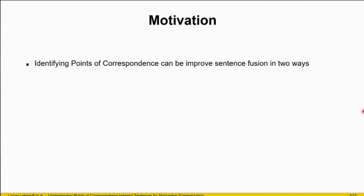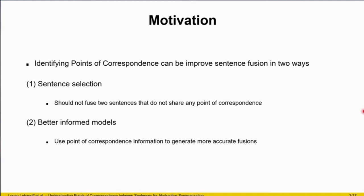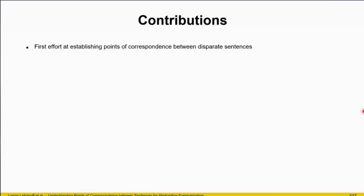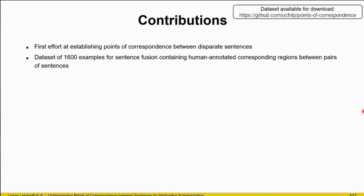We believe that identifying points of correspondence can improve sentence fusion in two different ways. The first is sentence selection — we shouldn't be fusing two sentences that do not contain any points of correspondence between them. And we can better inform models with this information to generate more accurate sentence fusions. The main contributions of this work are that we are the first effort at establishing points of correspondence between disparate sentences. To do this, we create a new dataset of 1,600 examples for sentence fusion containing human-annotated corresponding regions between pairs of sentences. This dataset is available on GitHub.